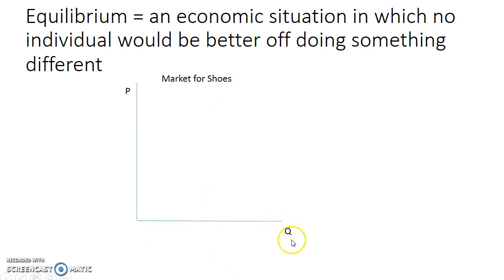on the horizontal axis just put a Q, because that means the quantity of shoes, and on the vertical axis I've got the P for the price of shoes.